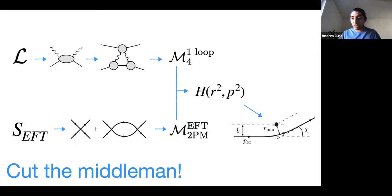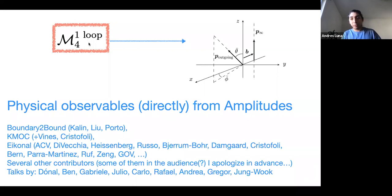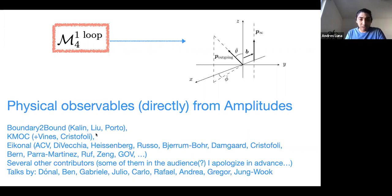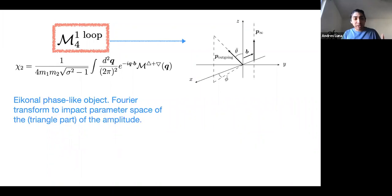But the trend now is to cut out the middle step. Some people don't like the EFT, don't like the Hamiltonian, and want to go directly from full theory to observables. We have seen during this week several approaches: the BERN, CHEUNG, SOLON, and new and important work; technology from KMOC and new collaborators; and also eikonal methods, which are similar in principle. There are lots of collaborators and lots of talks this week. Can we do something in this spirit?